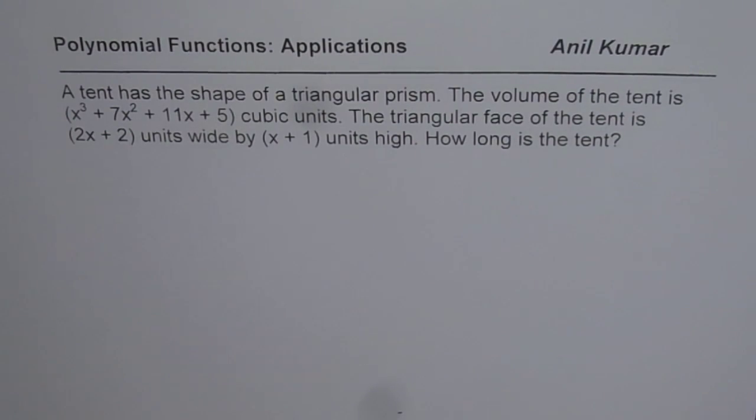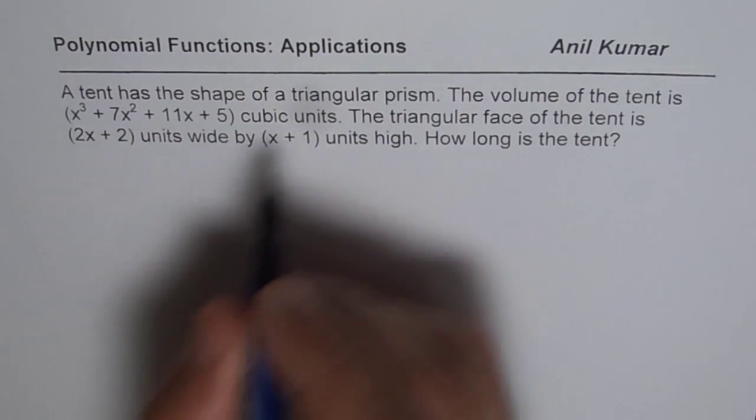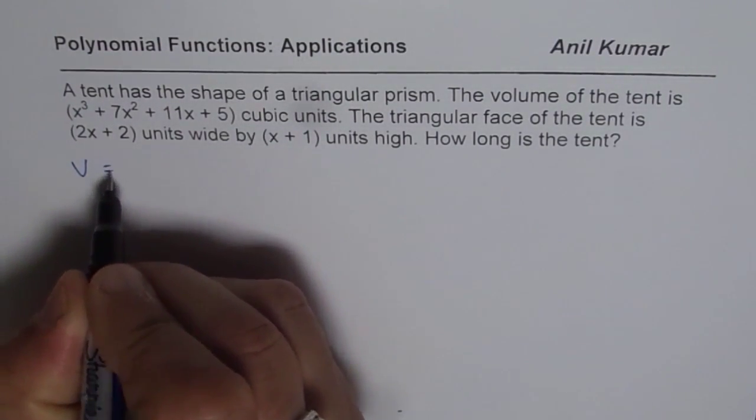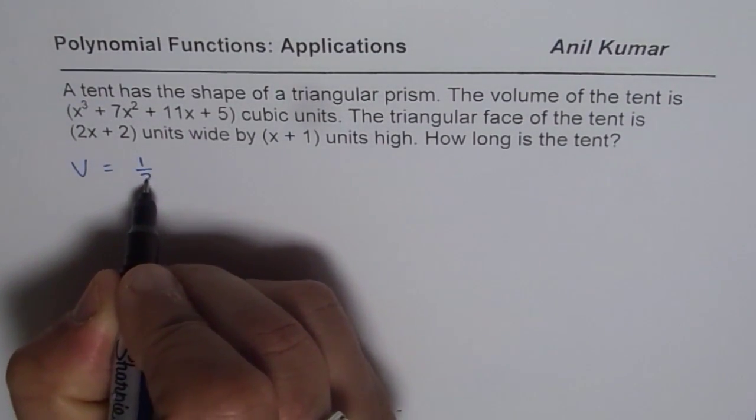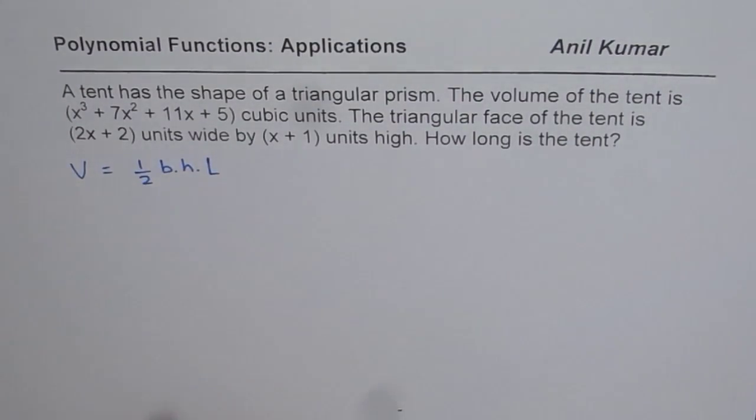As you know, the volume for a triangular prism will be area of the base into height. Since the triangle is considered to be the base, area of the triangle is half base times height. And then the length will give us the volume. That is how you get the expression for volume.